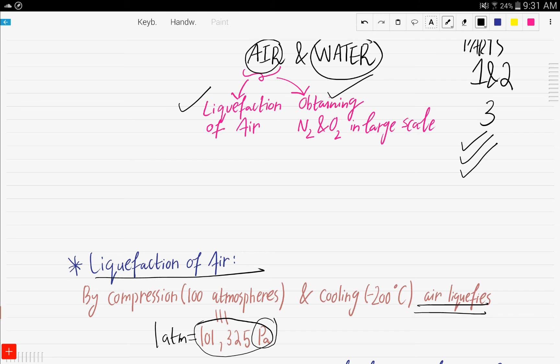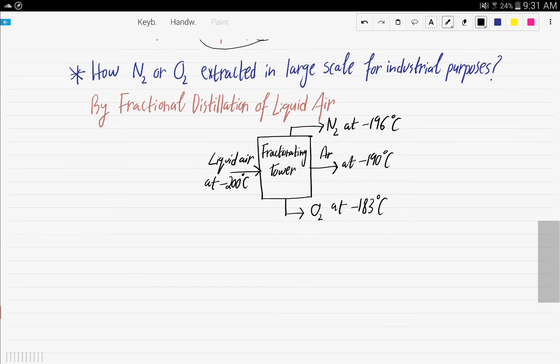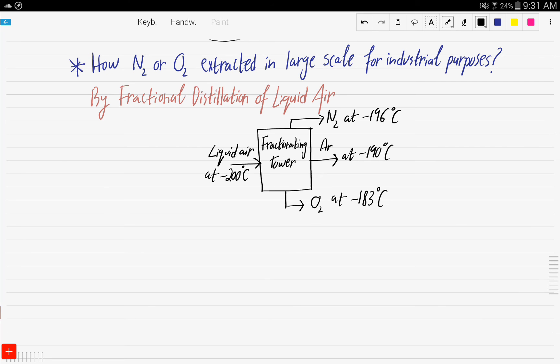Now let's go to how nitrogen or oxygen is extracted on large scale for industrial purposes by fractional distillation of liquid air. Of course, we have discussed fractional distillation extensively in Chapter 2. If you remember, distillation is basically vaporization plus condensation. Fractional distillation is separating miscible liquids into separate fractions according to their boiling points. If you want to refresh your memory on fractional distillation, you can go back to the videos of Chapter 2.